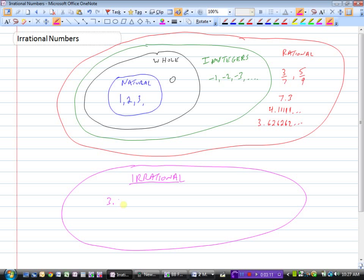So 3.6198432... Any decimal that goes on forever and does strange or weird things with no pattern, we call irrational numbers.